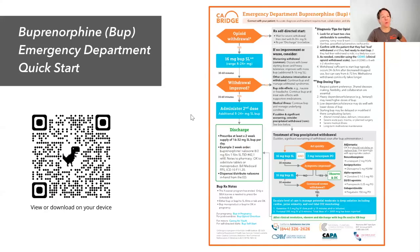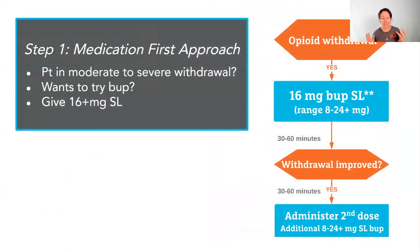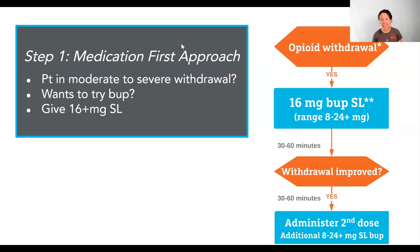We have a full lecture about how to start buprenorphine for patients in withdrawal — please reference it if you're not familiar. The basics: if your patient is in withdrawal, they need to actually be in withdrawal so we're not going to precipitate withdrawal. If you have a full agonist like fentanyl in your system, buprenorphine would knock that off and bring you into precipitated withdrawal. We want patients to have already entered withdrawal so that buprenorphine is lifting them up, relieving pain and suffering. If the patient wants to try buprenorphine, you offer: do you want to feel better now? Then give them at least 16 milligrams — oral, dissolvable, under the tongue — and reassess.